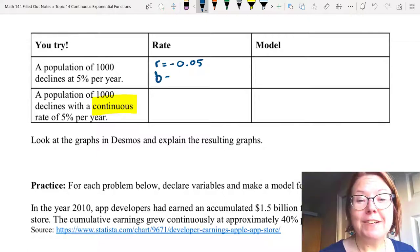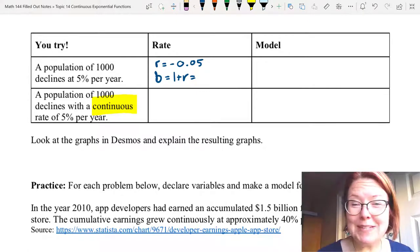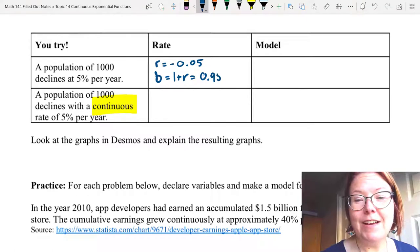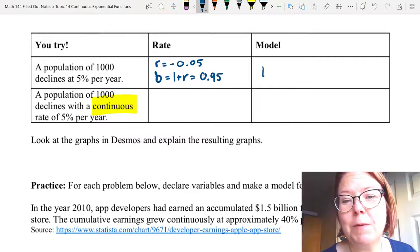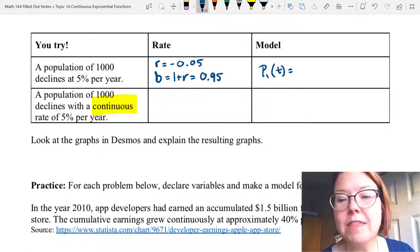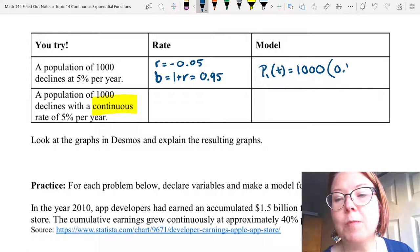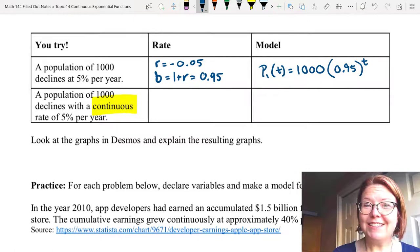That means the growth factor, B, is 1 plus R, which would be 1 minus 0.05 or 0.95. Our model would be P₁(T) equals 1,000 times (0.95) to the T power.